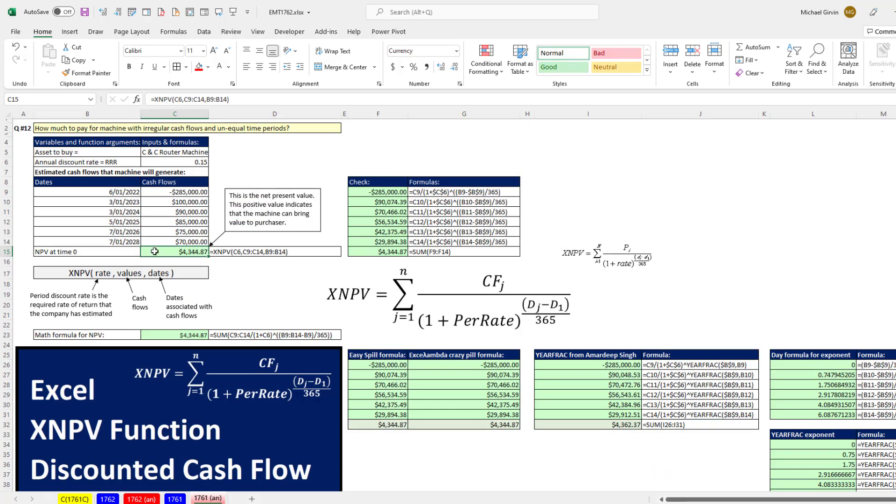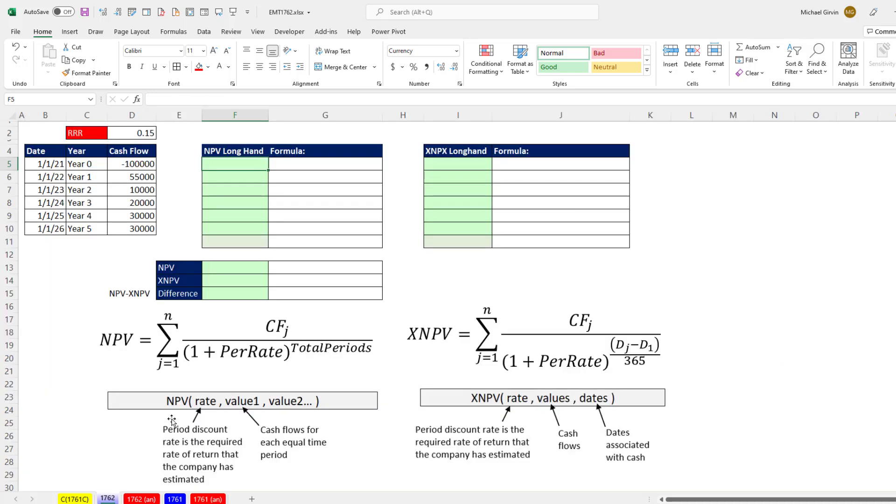Now, in the last video, we had cash flows where the time periods were not periodic with the payments at the end of each period. When you have cash flows like this, you cannot compare the functions. The NPV requires cash flows for equal time periods at the end of each time period. However, if we have periodic cash flows, then we can use both algorithms where the difference is the exponent. XNPV uses the number of days divided by 365, and NPV just uses an integer number of total periods.